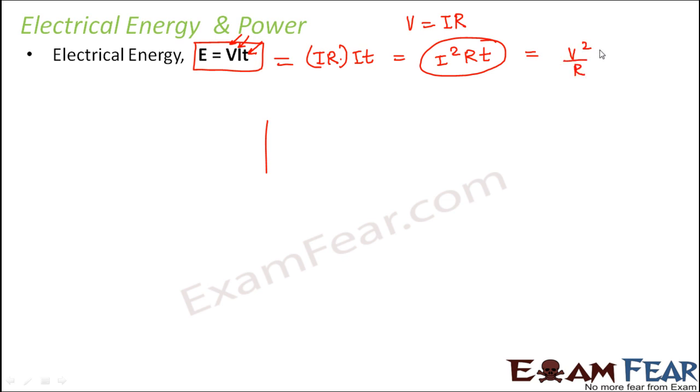Now let us quickly see how do we calculate electrical energy. So electrical energy is given by E equals VIT where V refers to the potential difference or the voltage, I refers to the current and T is the time taken. This can also be written in terms of resistance because from Ohm's law we know that V equals IR. So V can also be written as IR into I into T that is equal to I square RT. So this is also one way of writing electrical energy in terms of current and resistance. You can also write it as V square by R into T in terms of voltage and resistance. So this is how you can express electrical energy.